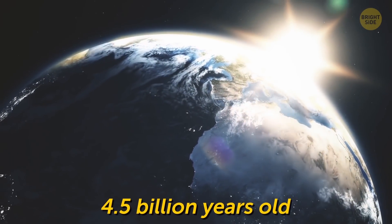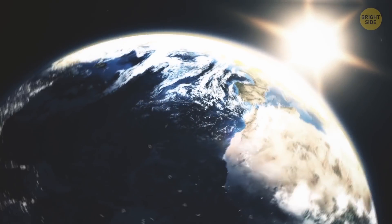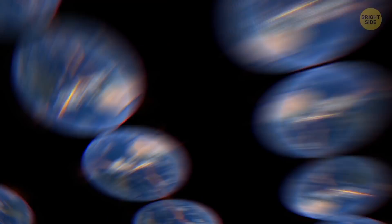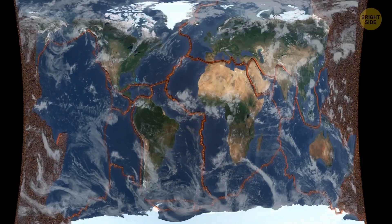Our planet is about 4.5 billion years old, give or take, and it has a history of doing shadowy things, such as creating landmasses and then making them disappear.